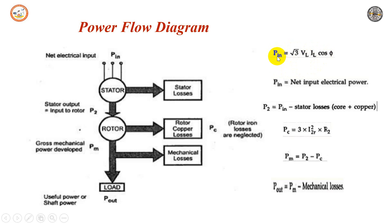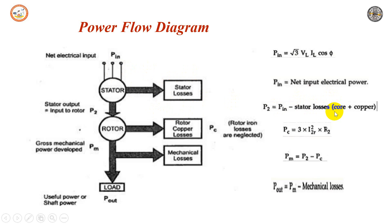The net electrical power supplied is P_input, which is the stator input. Part of this power is utilized to supply the stator losses, which are stator core losses and copper losses. After accounting for these losses, the remaining power is delivered to the rotor as rotor input power P2. This power is transferred magnetically through the air gap with the help of the rotating magnetic field, so P2 = P_input minus stator losses.